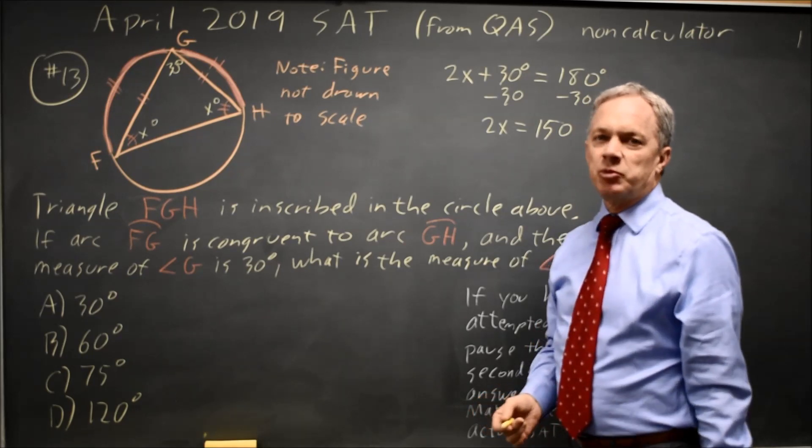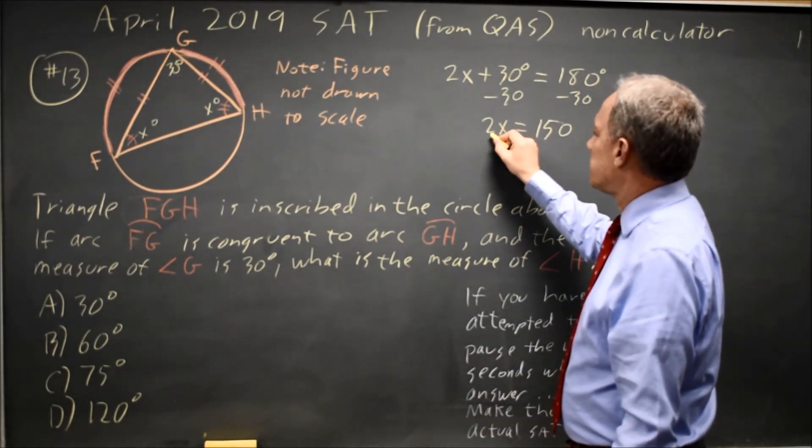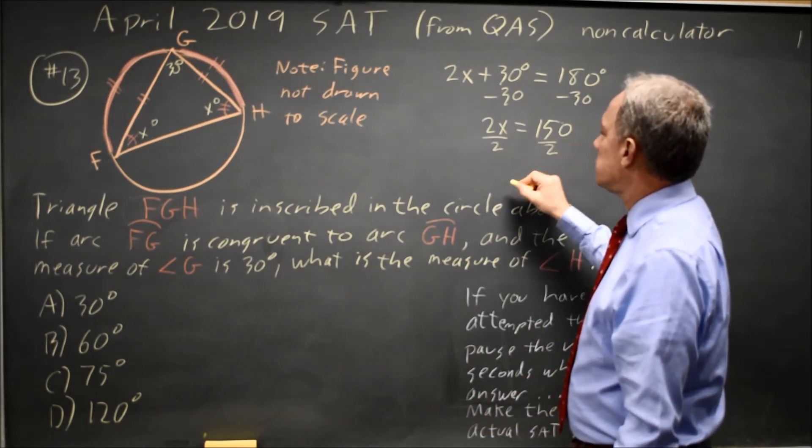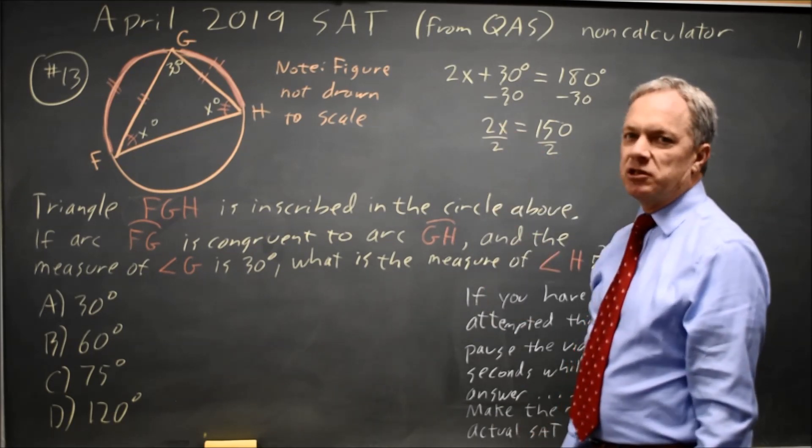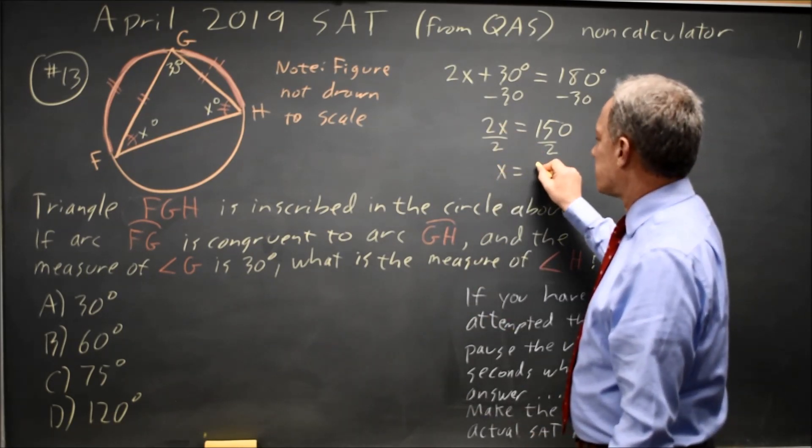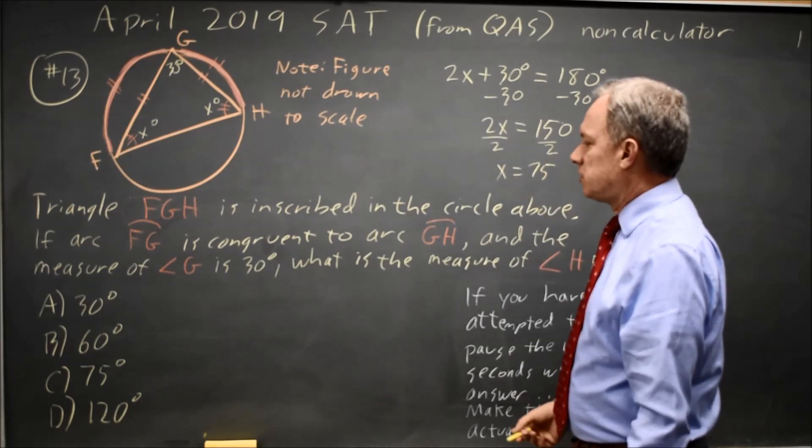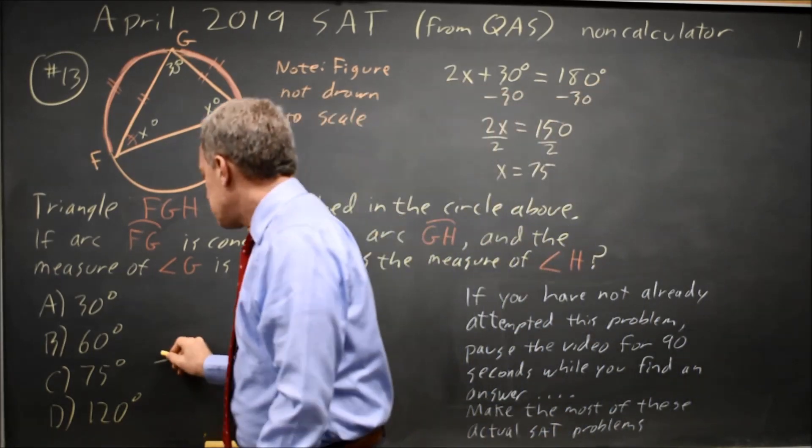Notice I always do the same thing to both sides of an equation when I'm solving an equation. Divide both sides by 2 because X is multiplied by 2. To get it by itself, I divide by 2. X equals 150 over 2 is 75 in degrees. That would be choice C.